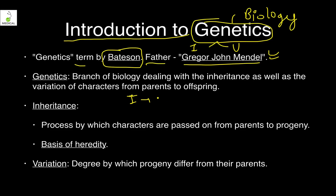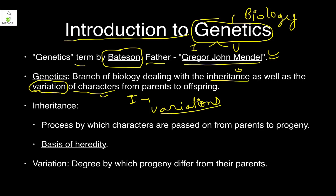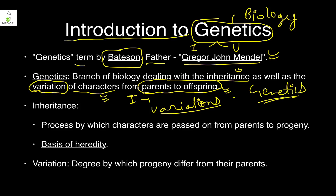Inheritance means, for example, you are tall because your parents were tall, or you are fair-skinned because your parents were fair-skinned — some of the parents' genes have come to you. Variation means you are not exactly as tall as the average of your mother and father; some variation has occurred. The branch of biology dealing with inheritance as well as variation of characters from parents to offspring is genetics.